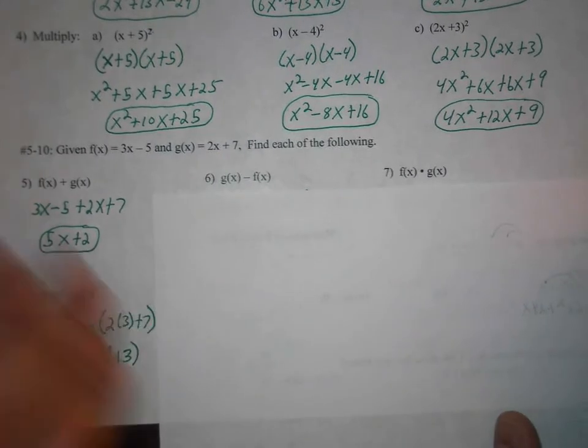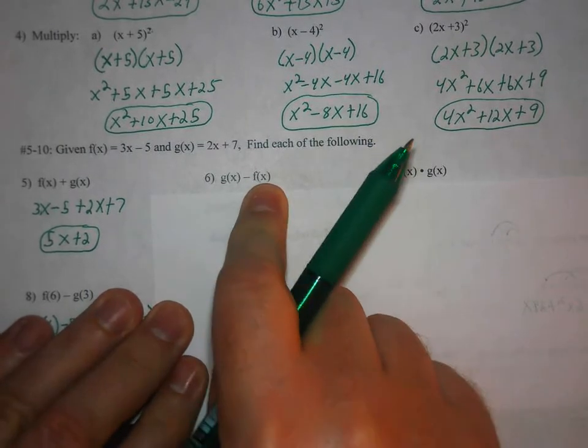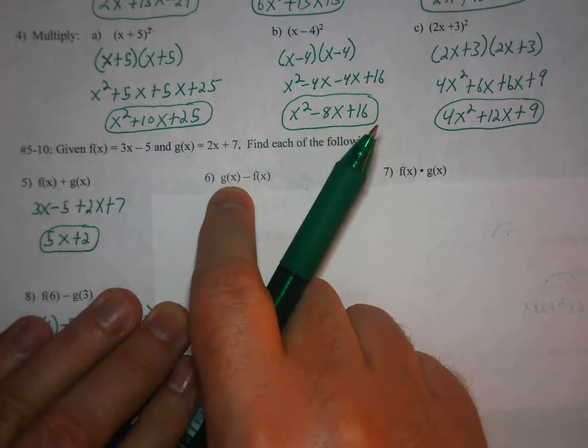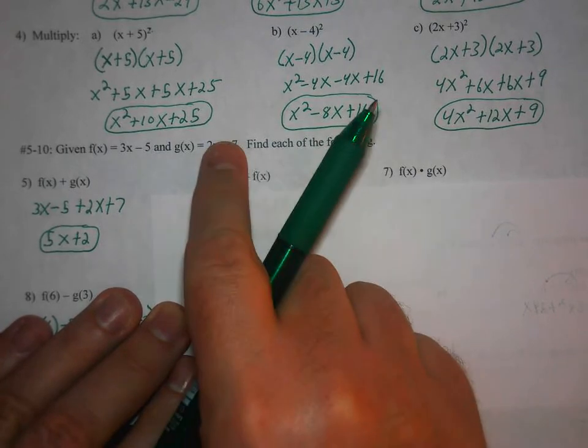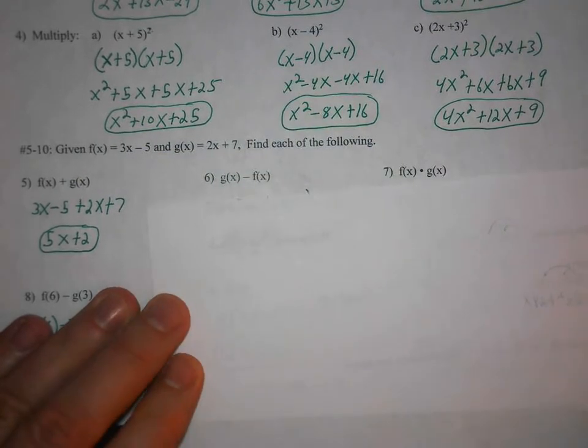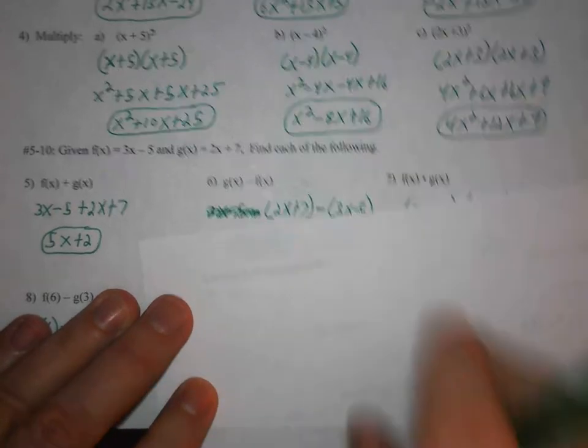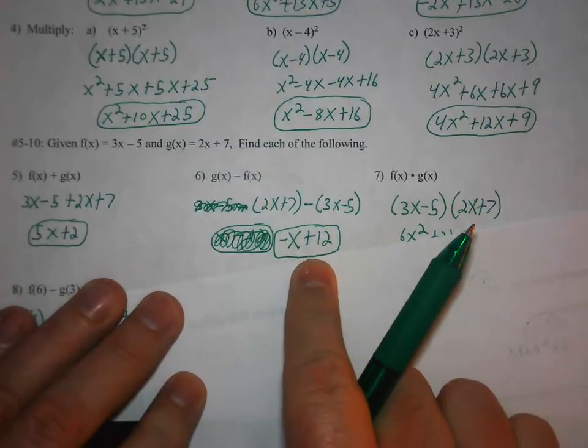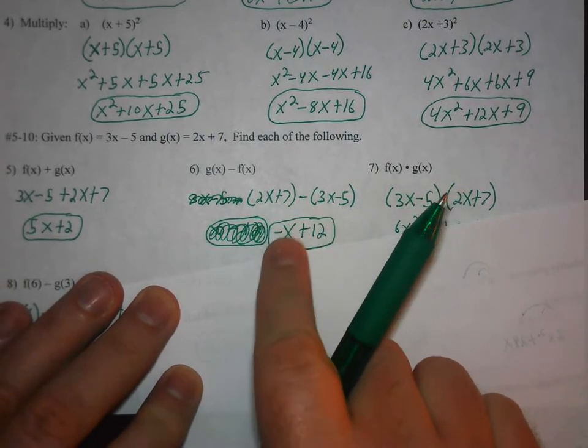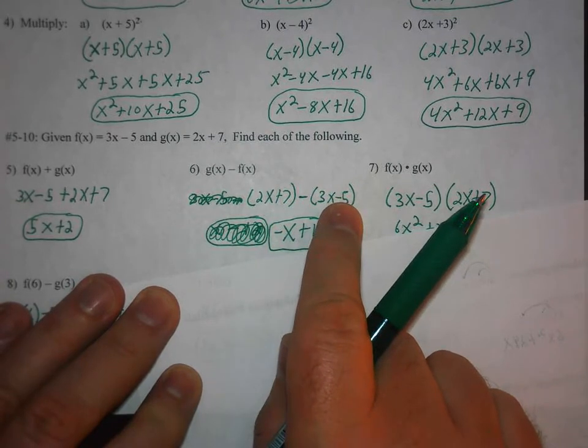And then with g of x minus f of x, make sure you put them in order. You'll see on my answer key I messed it up at first. So g of x minus f of x. So that's 2x plus 7 subtract 3x minus 5. So then when you do that, you end up with negative x plus 12. Because 2x subtract 3x is negative 1x. And then 7, take away negative, is adding 5.